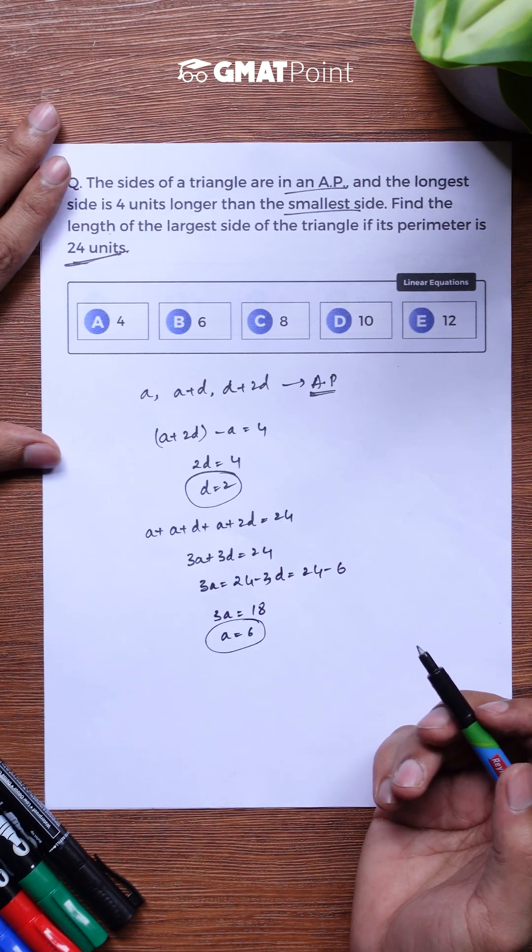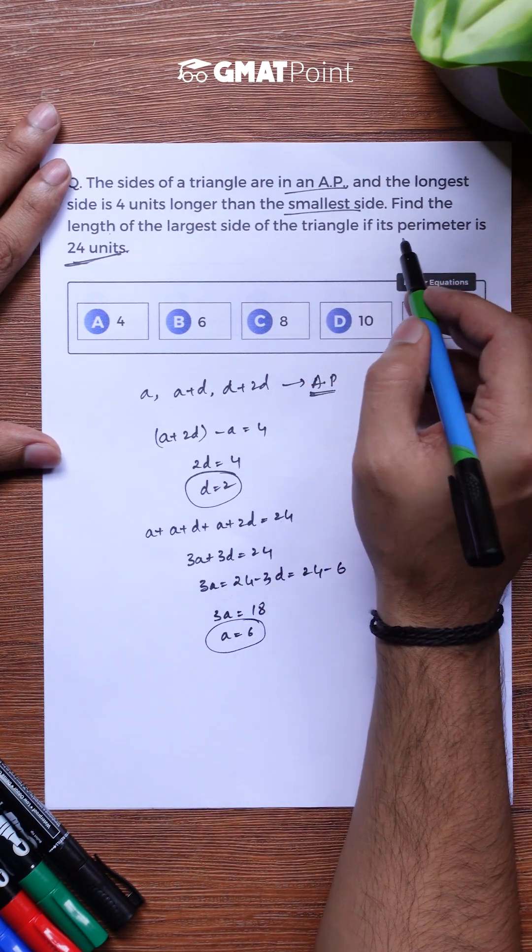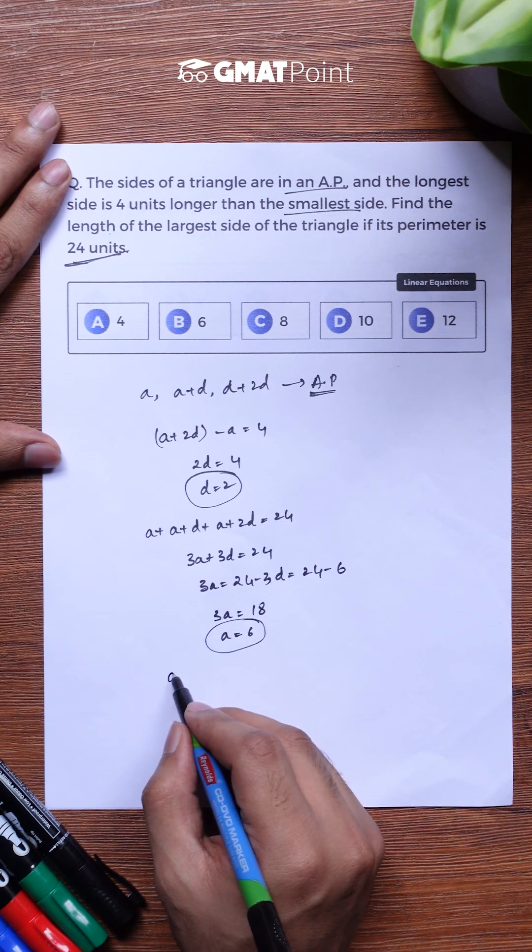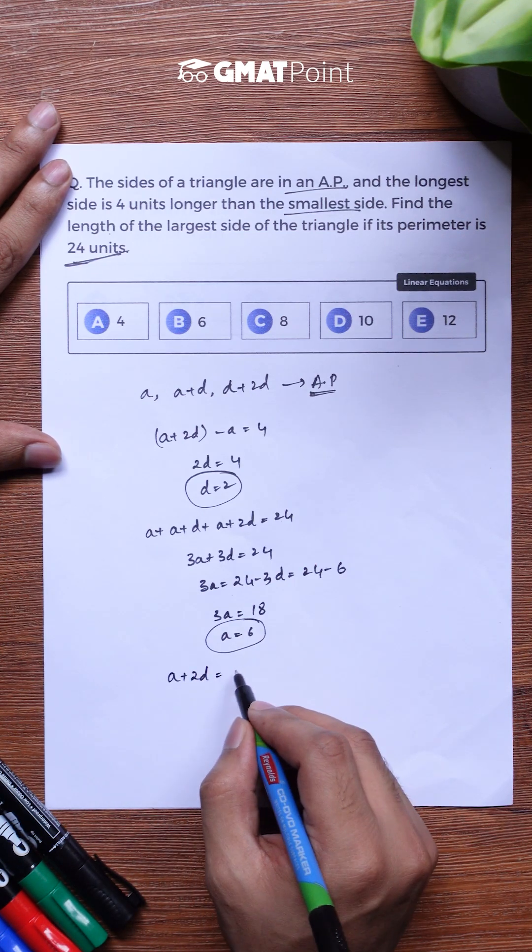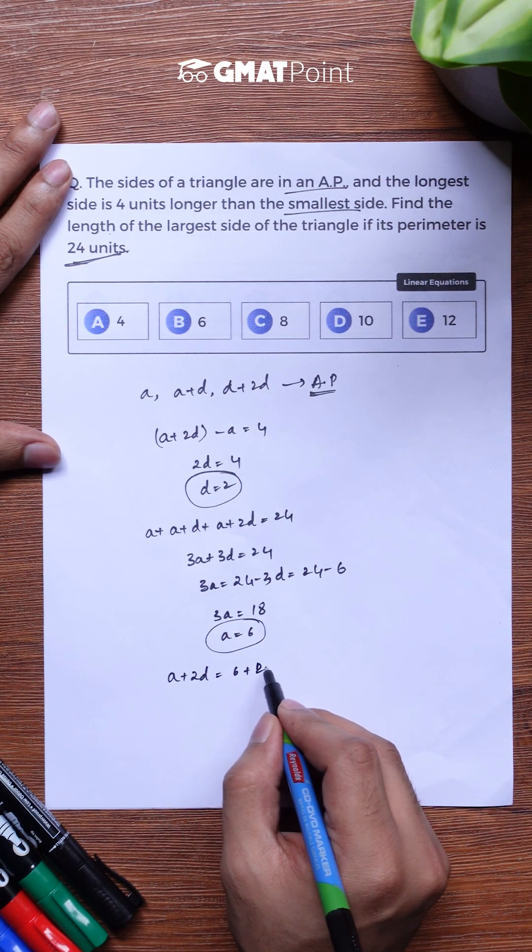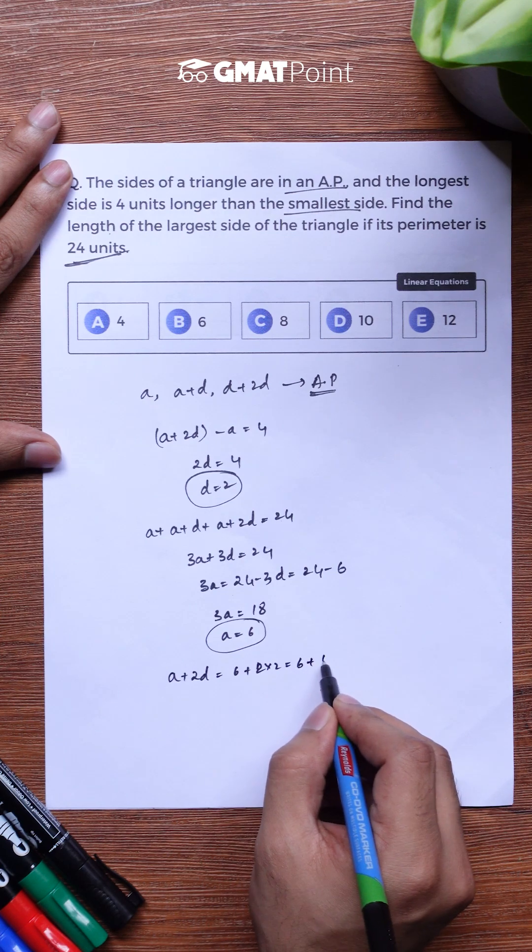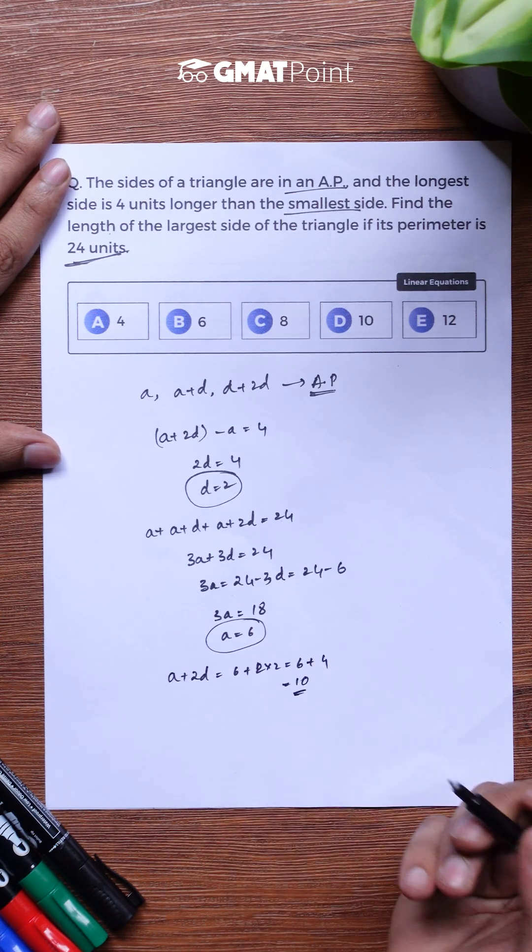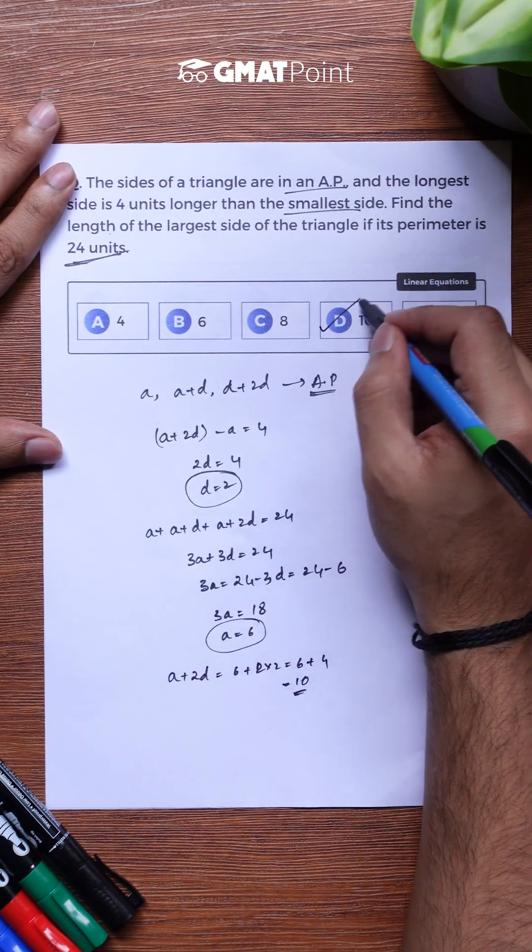Now we are asked to calculate the largest side of the triangle and the largest side of the triangle is A plus 2D that is equal to 6 plus 2 into 2 that is 6 plus 4. And the value of largest side of the triangle is 10 and the correct answer is option B.